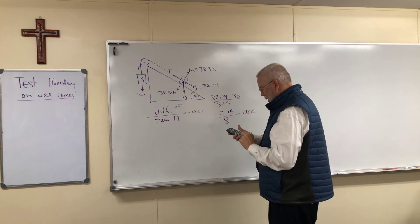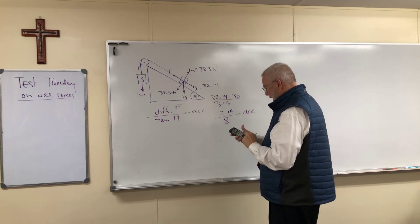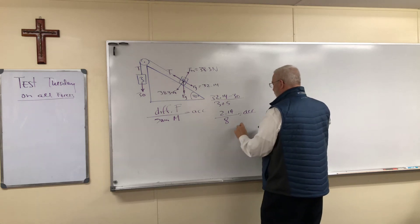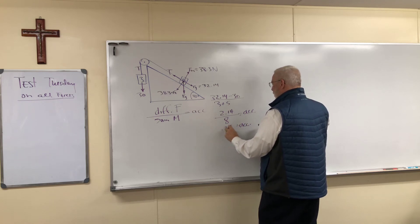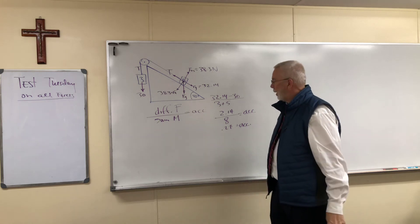So 2.14 divided by 8 gives us an acceleration, a very small acceleration I might add, of 0.27 rounded to two decimal places.